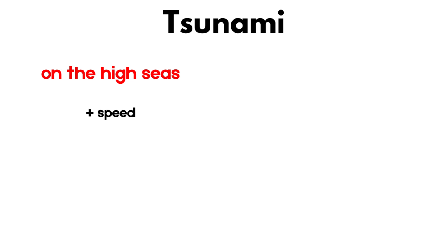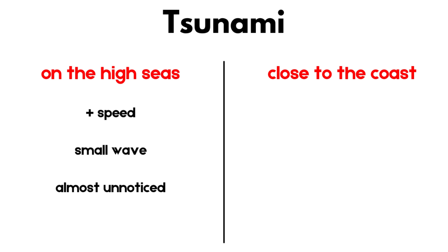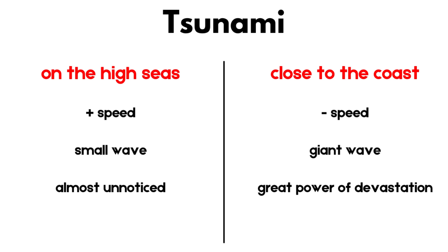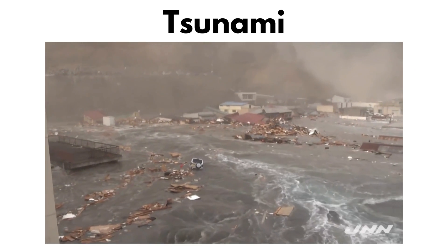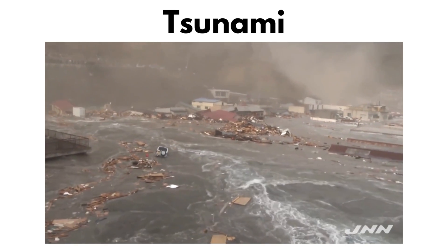These waves travel at very high speeds in open ocean, reaching speeds of hundreds of kilometers per hour, but their height is relatively small, often going unnoticed in deep waters. As tsunami waves approach the shore, their speed decreases due to interaction with the ocean floor and coastal topography. At the same time, the height of the waves increases significantly as water is forced to accumulate in shallow areas near the coast. This results in devastating tsunami waves that can reach heights of tens of meters when they hit the land.